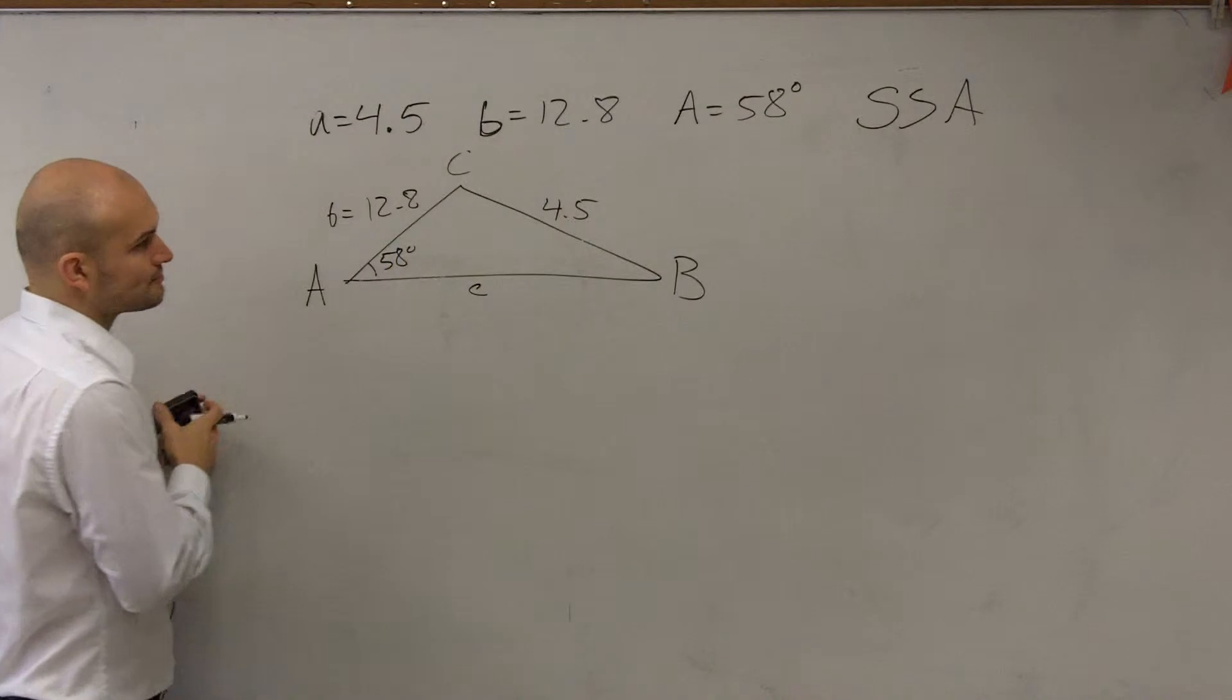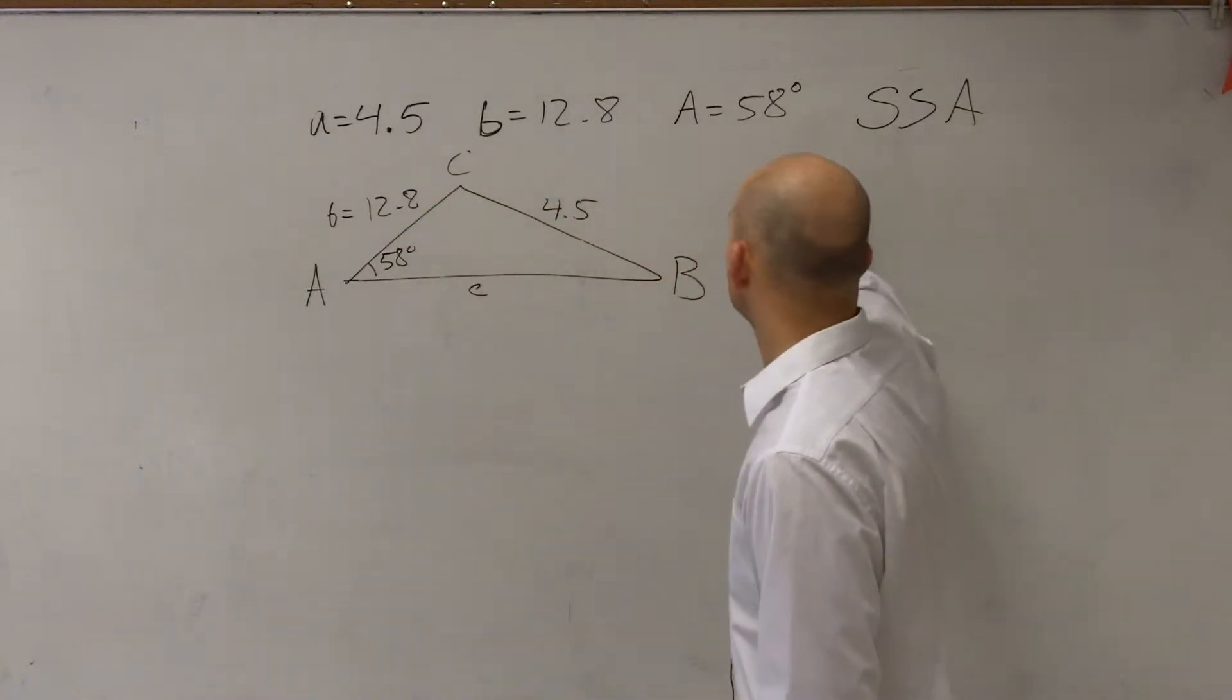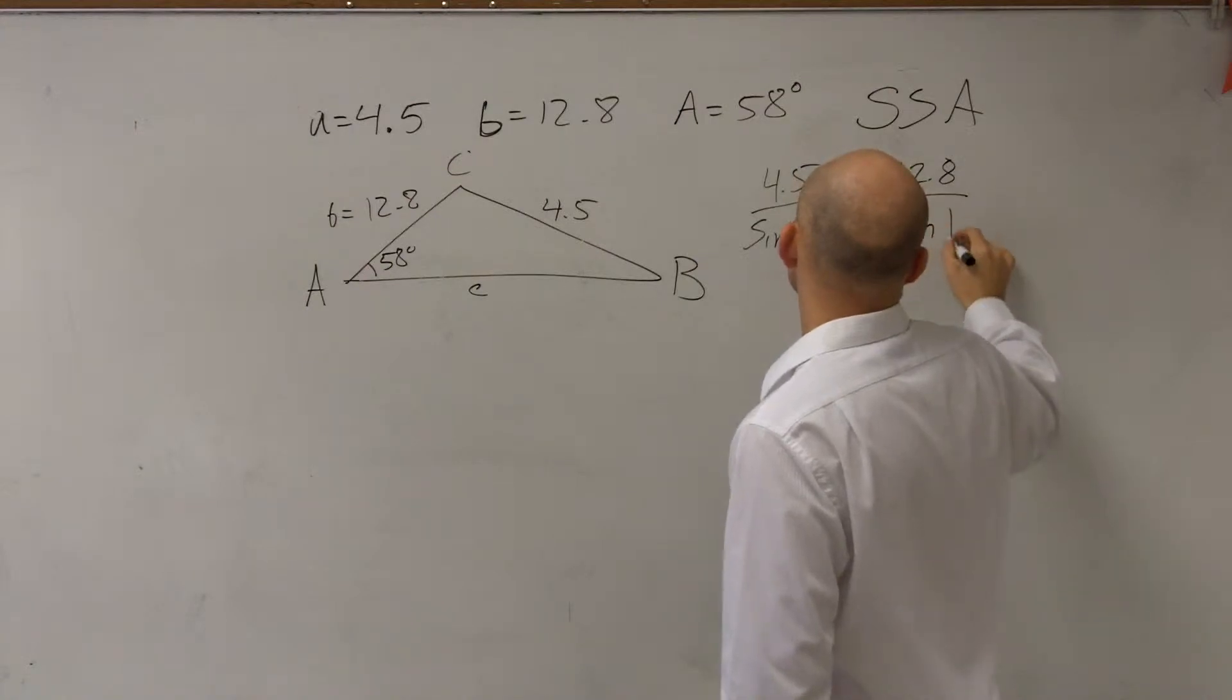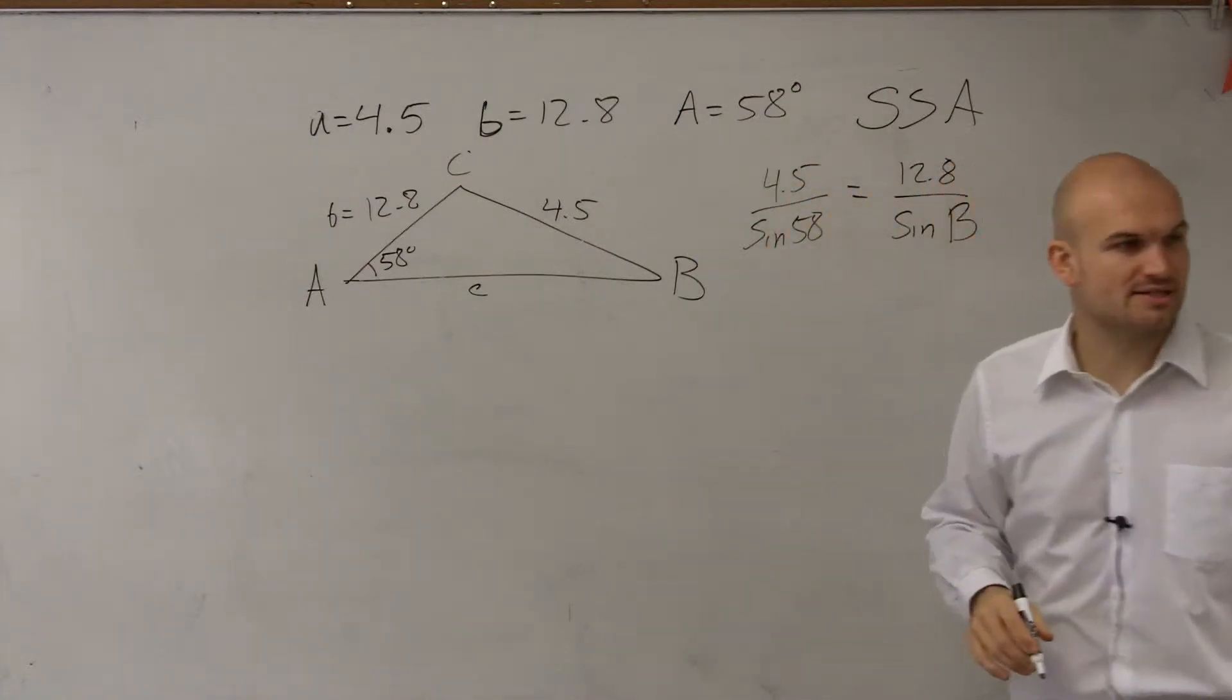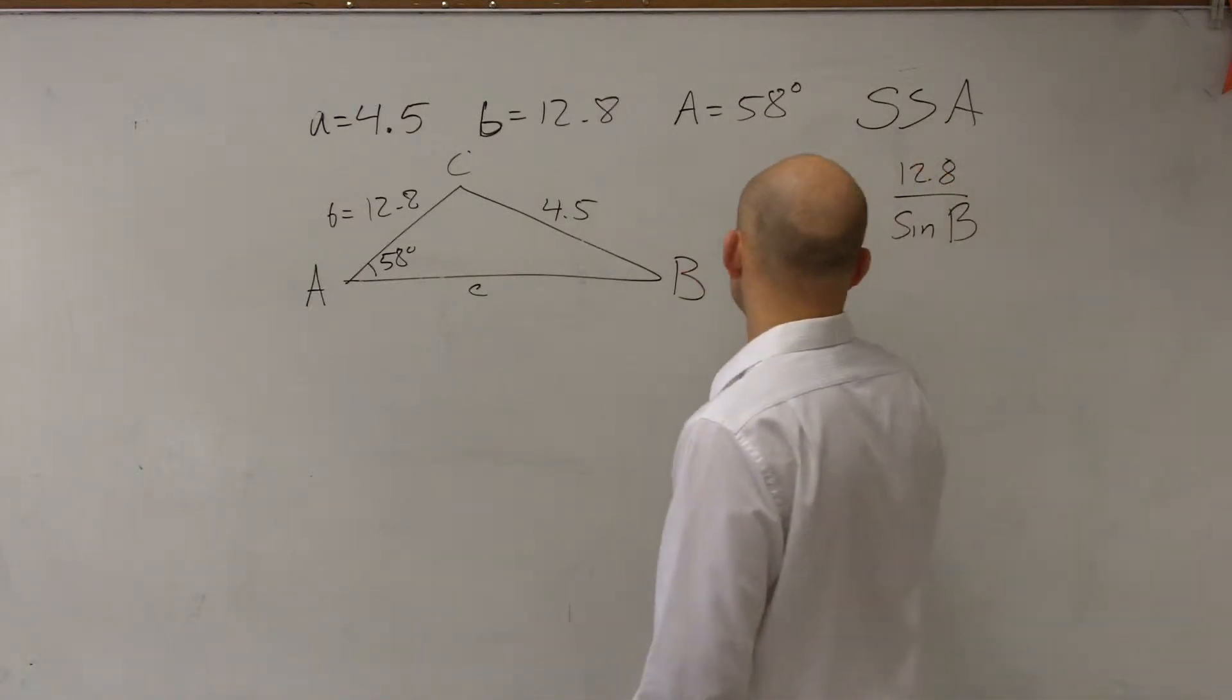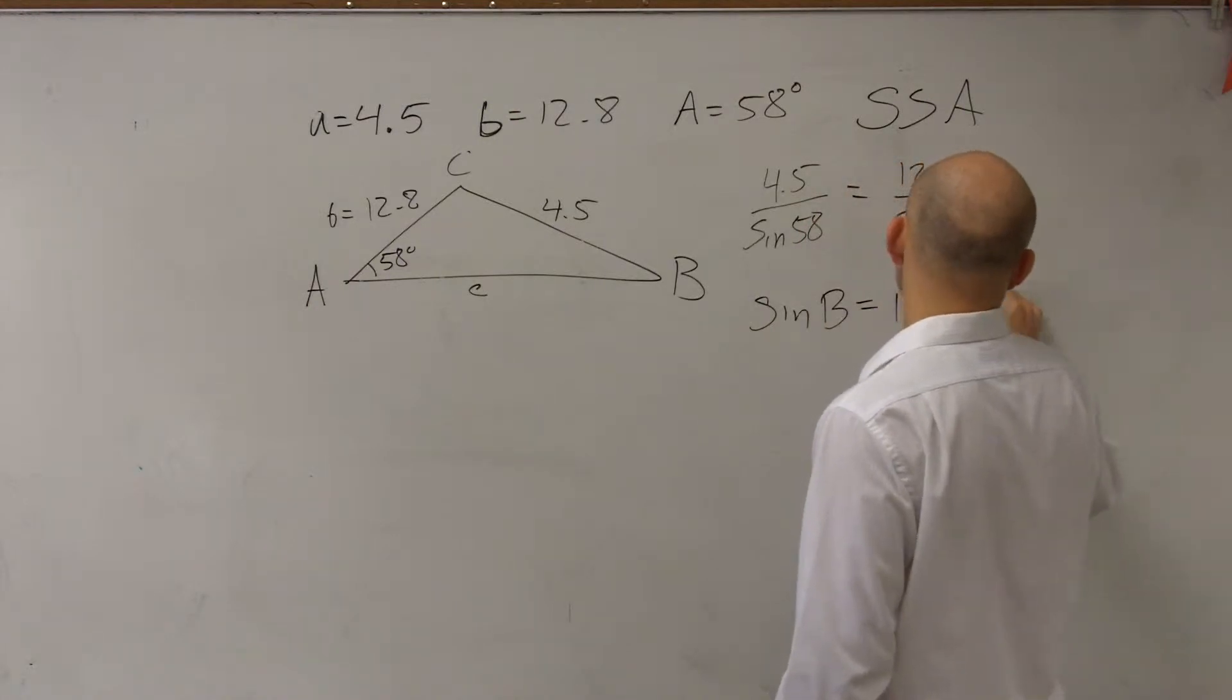So on the first one, what we look at is we need to create the law of sines. So I'm going to have 4.5 over the sine of 58 equals 12.8 divided by the sine of B. I don't need to worry about c right now because I don't have a c in here. So now let's go and solve for the sine of B. So I can say the sine of B equals 12.8 times the sine of 58 degrees divided by 4.5.